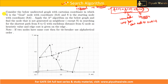The question: consider the below undirected graph with Cartesian coordinates in which g is the goal at origin (0,0) and s is the starting node at coordinate (9,6). Apply A* search on the graph and find the shortest path from s to g, using Euclidean distance from the goal node as the heuristic value.